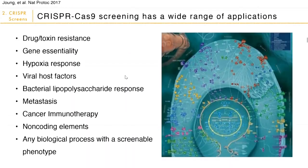CRISPR-Cas9 screens have become very useful for discovering a series of different phenotypes of interest. Just to name a few examples: CRISPR-Cas9 screens have been very useful for drug and toxin resistance, discovering gene essentiality, and more recently, people have used them to study viral host factors as well as immunotherapy. Going beyond coding genes, you can also engineer CRISPR libraries to target non-coding elements, and basically you can do a CRISPR-Cas9 screen for any biological process with a screenable phenotype.